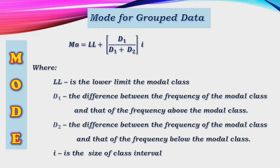For grouped data, the formula for mode is: Mode = LL + [D₁ / (D₁ + D₂)] × I. Where LL is the lower limit of the modal class; D₁ is the difference between the frequency of the modal class and the frequency of the class above the modal class; D₂ is the difference between the frequency of the modal class and the frequency below it; and I is the size of the class interval.